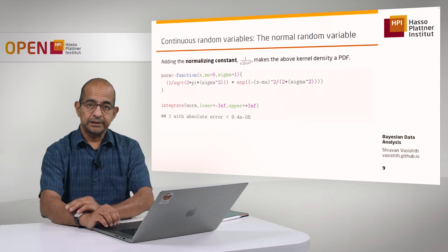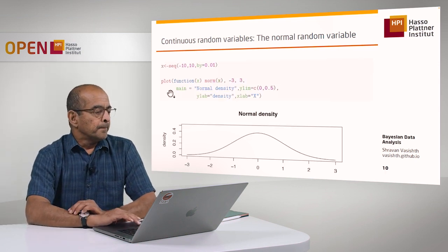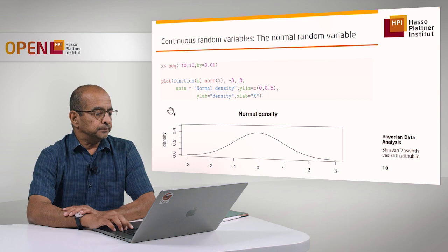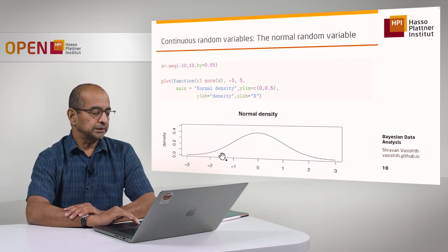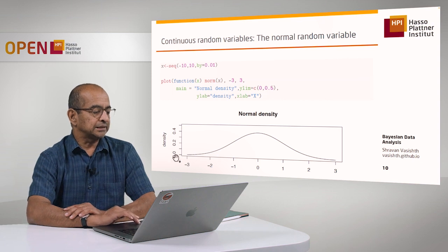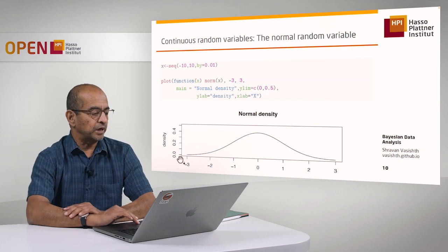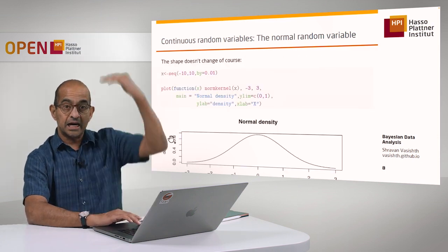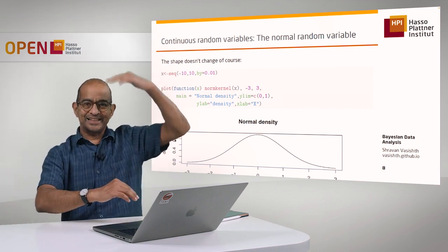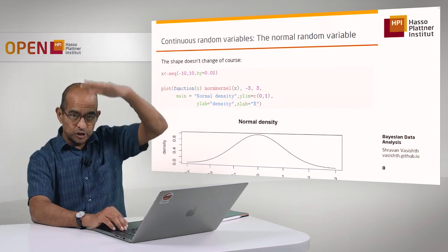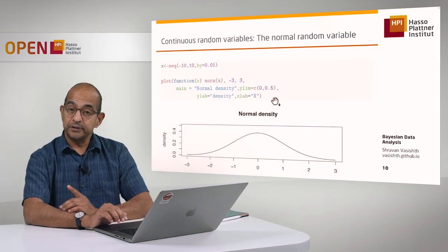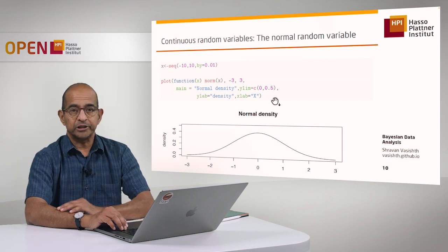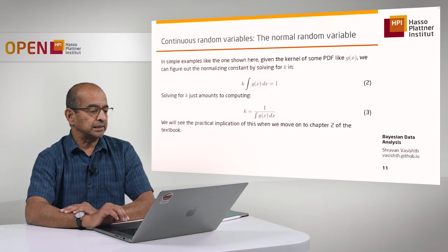The point I want to get across is that a probability density function has a normalizing constant and a kernel. The kernel determines the shape of the distribution; the normalizing constant ensures the area under the curve sums to one, making it a proper probability density function. You'll notice the height of this curve has changed compared to the earlier one — that's because the normalizing constant rescales the distribution. This is a very important idea we will need later when doing Bayesian analysis.